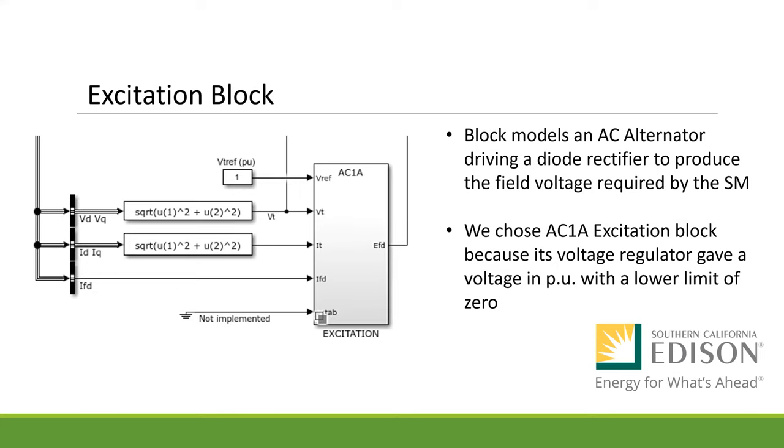The excitation block models an AC alternator driving a diode rectifier to produce the field voltage required by the synchronous machine. We had options such as AC1A, AC4A, AC5A, and DC1A. We chose to use AC1A because its voltage regulator gave a voltage in per unit with a lower limit of zero. This was a great fit to our model because most of our values were in per unit.